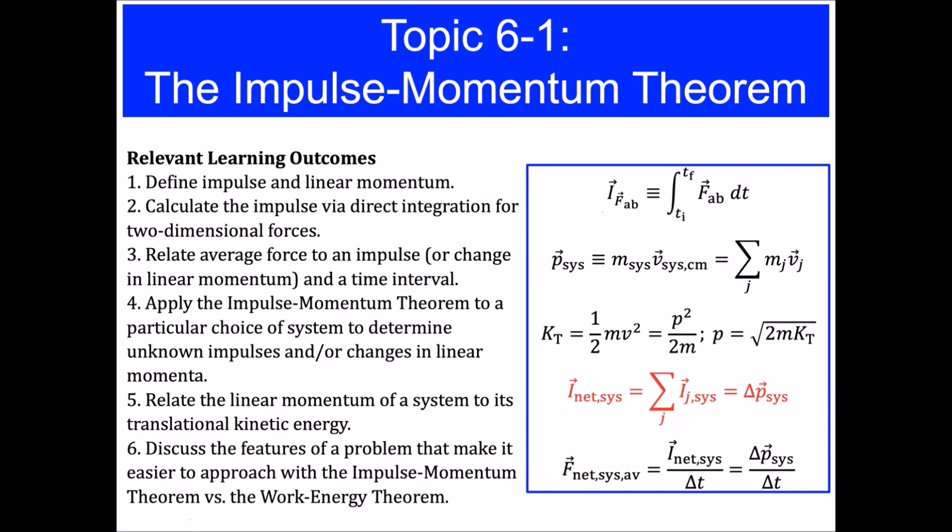Something else we want to do is outlined by learning outcome number three. We want to relate the average force associated with an impulse or a change in linear momentum to the time interval over which that average force occurs. So the last equation down here in the box describes this net average force that acts on a system in terms of the net impulse that force is able to exert on a system over a time interval delta t and the corresponding change in linear momentum the system might have over that time interval delta t.